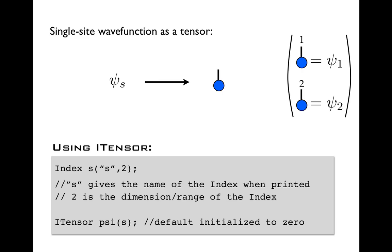And then the second argument to the constructor is very important, and it's actually the range of the index, or you could call it the dimension of the index. And this is something that we fix when we construct the index, and it can't be changed afterward. So this really defines this index once and for all.